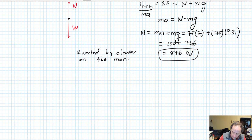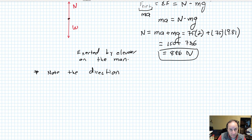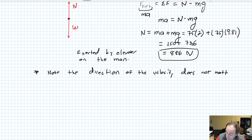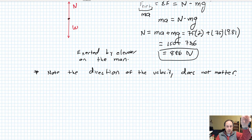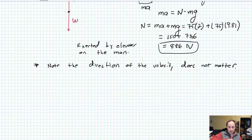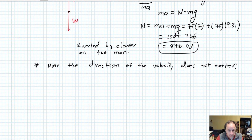One more thing to note: the direction of the velocity — the direction the elevator is moving — doesn't matter. What matters is the acceleration, which is a change in velocity. Whether the elevator is going up and speeding up, or going down and decelerating, a deceleration while going down is still an acceleration in the positive direction, so you get the same result.